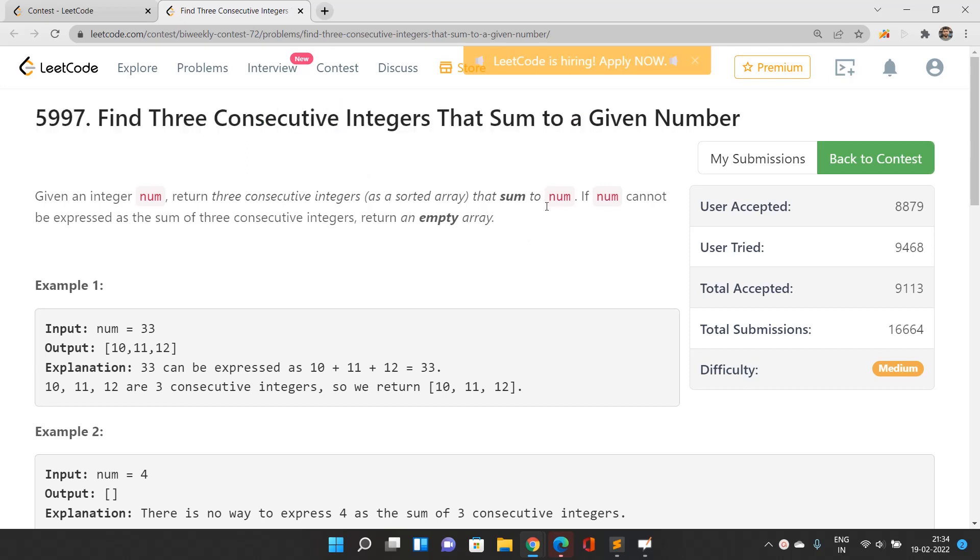So without wasting time, let's begin. Given an integer num, return three consecutive integers as a sorted array that sum to this value. The key point to notice is the integers must be consecutive, and we need to return a sorted array.